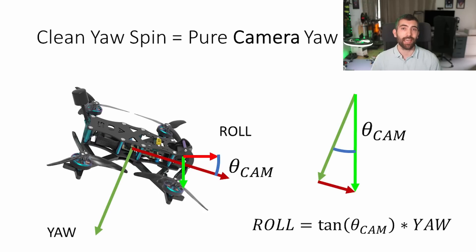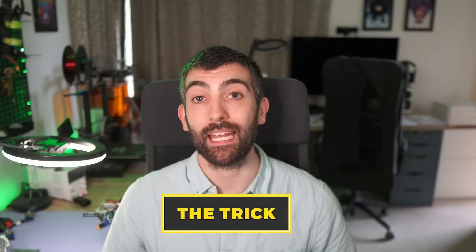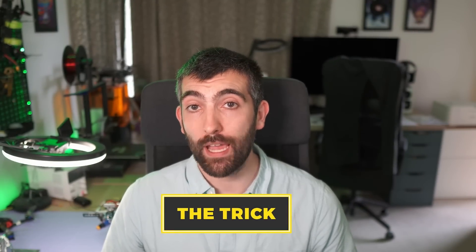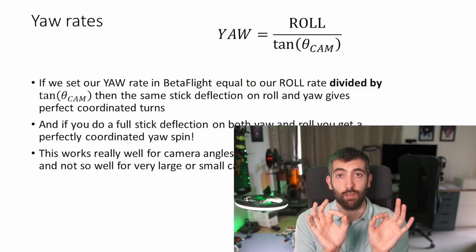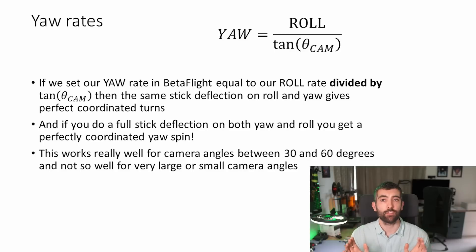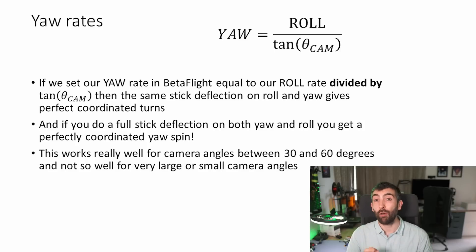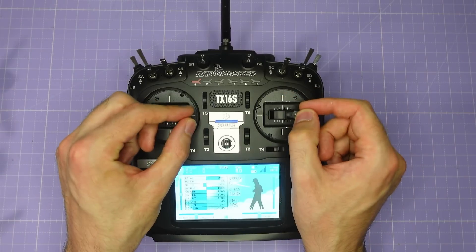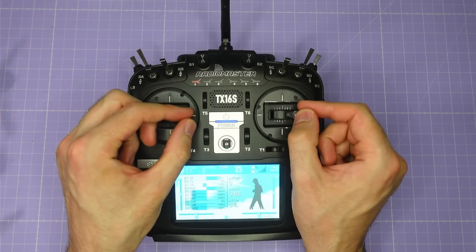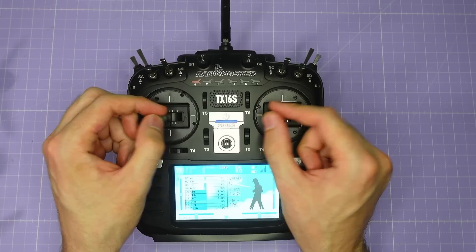The secret is using that information when we set up our yaw rates in Betaflight. If we set our yaw rate to be our roll rate divided by the tangent of our camera up tilt, something really amazing happens: an equal deflection of the roll and yaw sticks always gives you a perfectly coordinated turn. You don't need to worry about camera up tilt or how fast you want to do the spin — you'll always get a perfectly coordinated turn if you deflect the sticks equally, and that's really easy to train from a muscle memory standpoint.